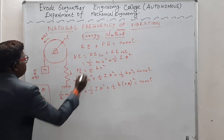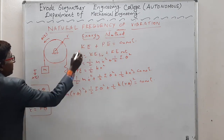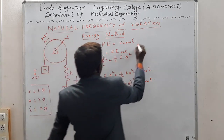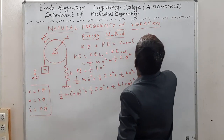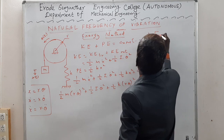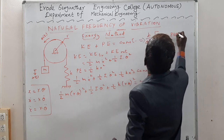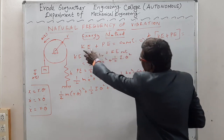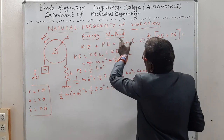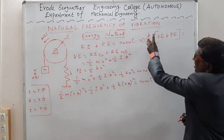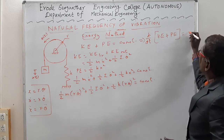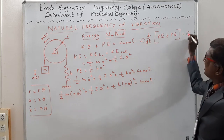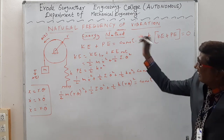The next step in the energy method is to differentiate the expression. Once you differentiate this expression, this becomes d/dt of (KE plus PE). What will happen to the right-hand side? Since KE plus PE equals an arbitrary constant, once you differentiate, the right-hand side becomes equal to zero. So the unknown constant vanishes once you differentiate the left-hand side. This is convenient for us to get rid of the unknown constant.